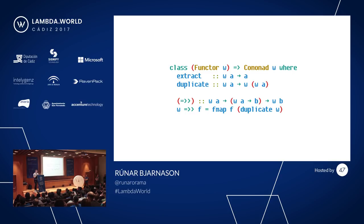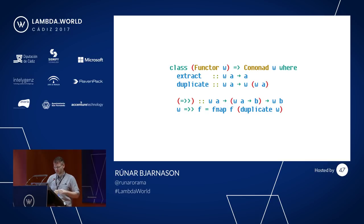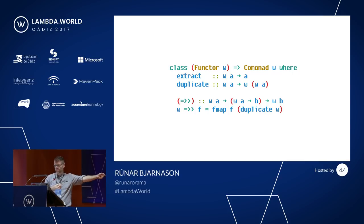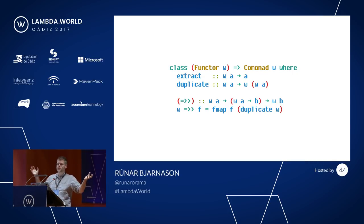A comonad is the opposite of a monad: instead of going from A to W of A (like return), we go from W of A to A (extract). And instead of join, we have duplicate, going from W of A to W of W of A. There's also co-bind (or extend): given a W of A and a function from W of A to B, we can produce a W of B. What that's saying is we can take a local computation that operates on some portion of W and apply it globally across the whole context.